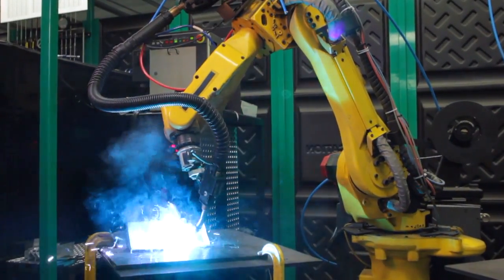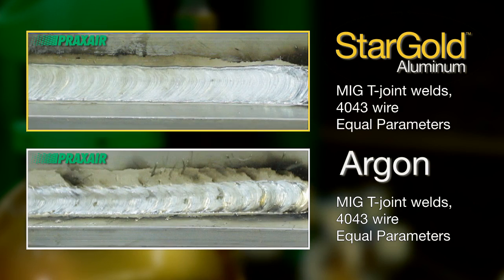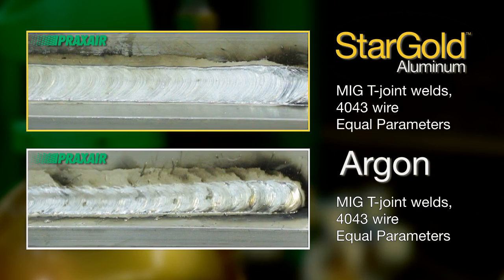Similarly, in conventional and pulse spray MIG welding, the ability to achieve better wetting and improved arc stability at a lower average arc voltage can aid in obtaining more consistent, higher quality welds.